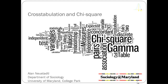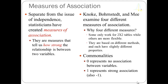We talked about calculating chi-square and we know that that's a test of independence with a null and alternative hypothesis, but what it doesn't measure is how strong the relationship is. It'd be nice to have a single statistic that describes whether there's no relationship, a complete relationship, or something in between — the degree of the relationship. Our textbook goes through several different measures of association.